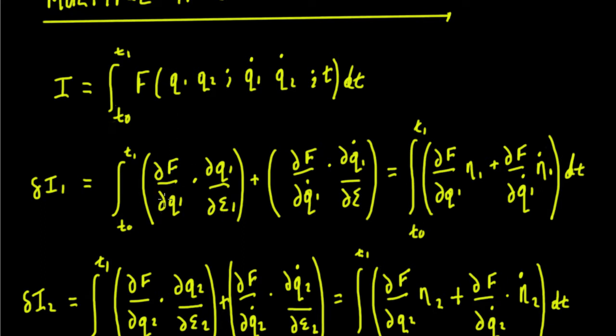So we're going to have ∂F/∂q1 times ∂q1/∂ε, and the same for the second, for the q dot and q dot there.